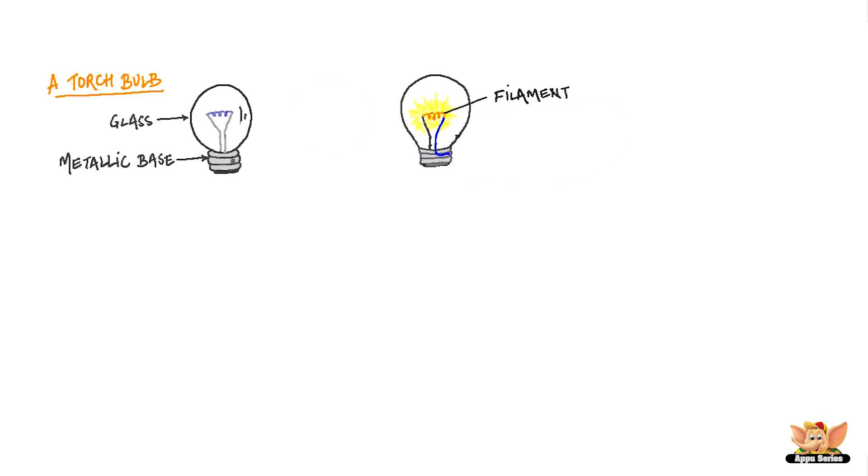This filament is attached to two thicker wires. One of these is connected to the metal case that surrounds the bulb. The other is connected to the metal tip at the base.